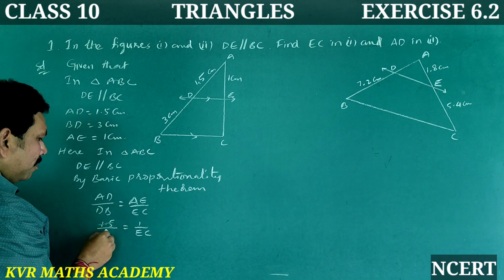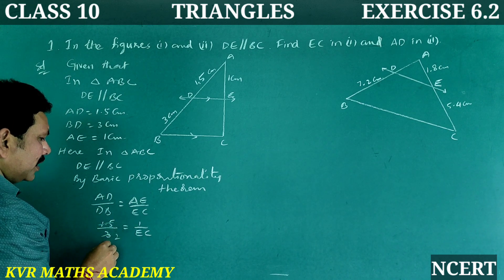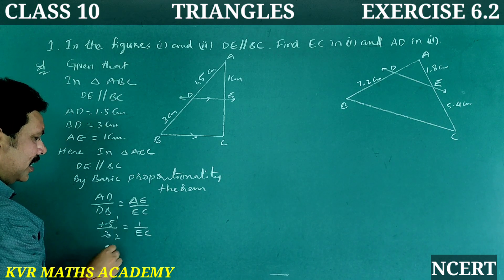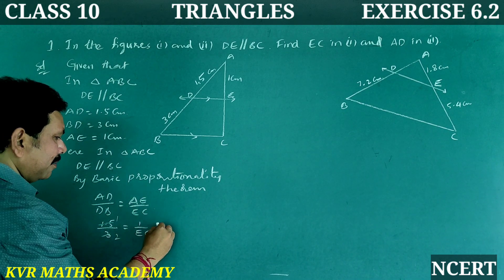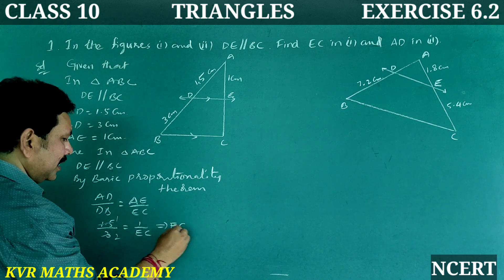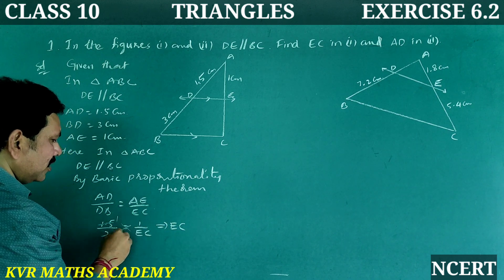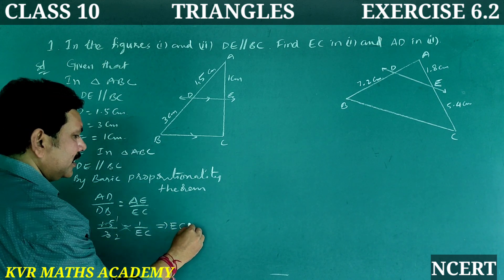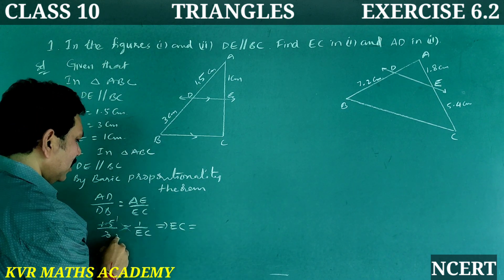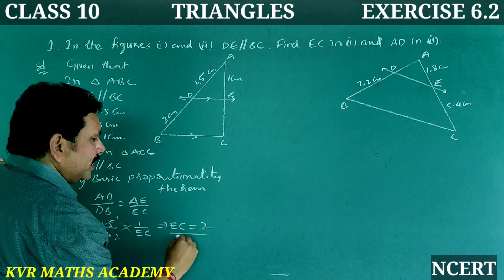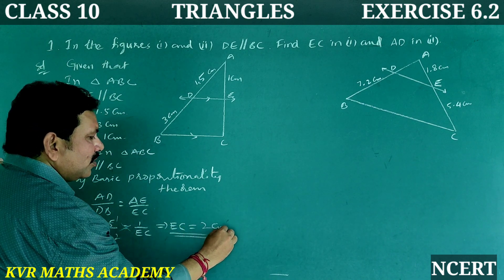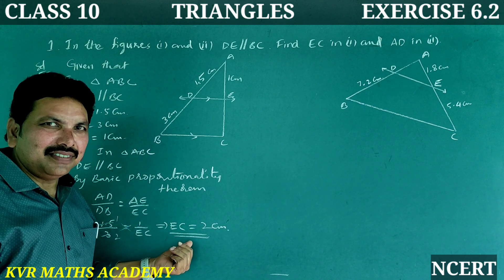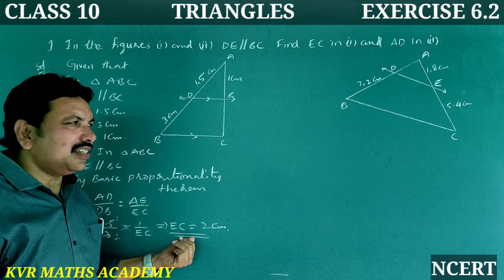1.5 twos are 3, 1.5 ones are 1.5. By cross multiplication, 1 into EC equals EC. That gives EC is equal to 2 centimeters.